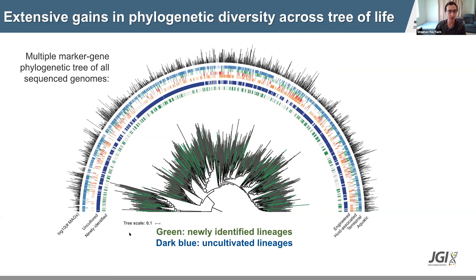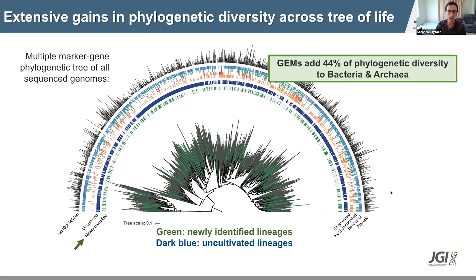We additionally constructed a phylogenetic tree of all the genomes — those from our study plus those from previously published studies. In this tree, the genomes from our study broadly cover the full diversity of both archaea, shown as a lineage on the left, and branching out across all bacteria. The new lineages discovered from our study are highlighted with green branches, and overall, the genomes from our study added 44% to the phylogenetic diversity of bacteria and archaea.